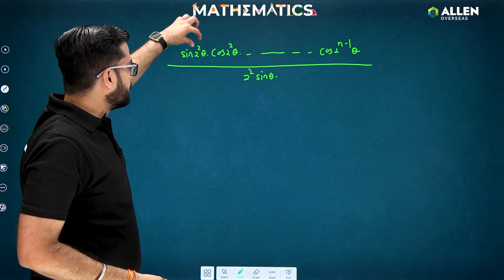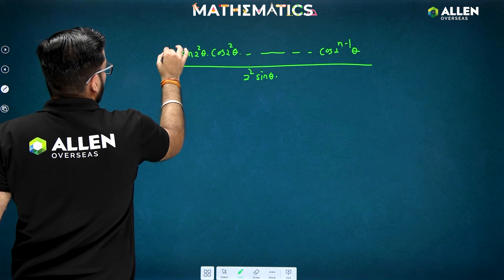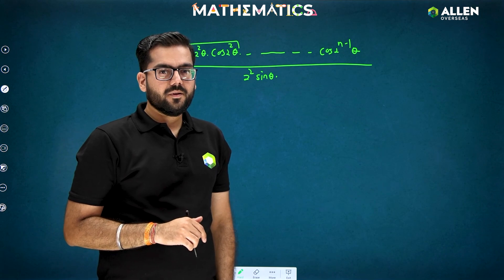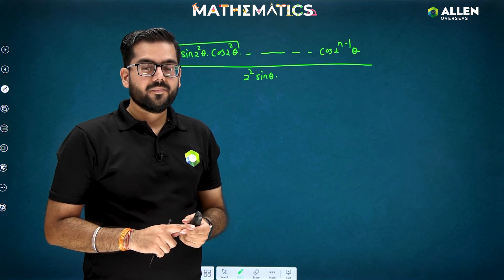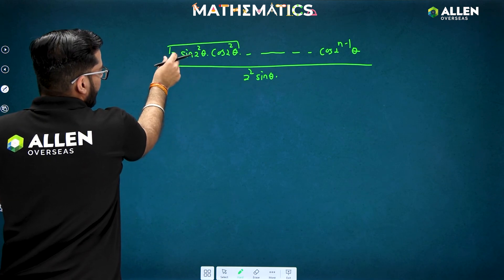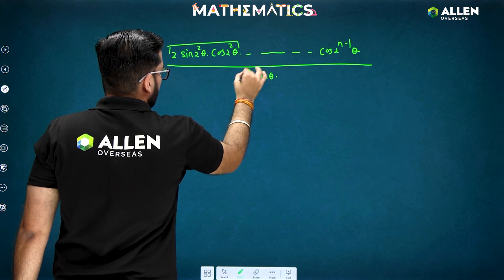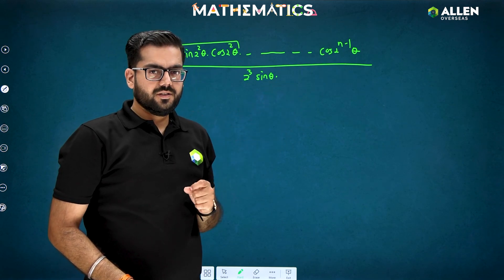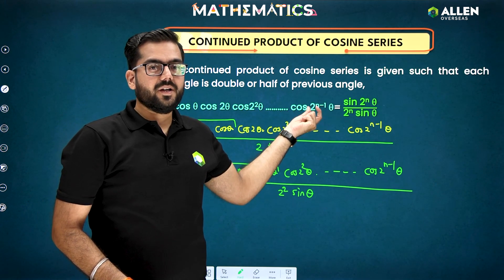Now there is sin 2²θ · cos 2²θ; if we multiply by 2 again it becomes 2 sin a cos a, giving sin 2³θ. In the same process we continue till cos(2^(n−1))θ. At the last step, if we multiply by 2 it goes all the way to the final term. The number of terms in the series is n — don't think that because we have 2^(n−1) there are n−1 terms; that is the nth term of the GP.